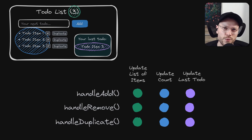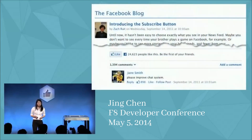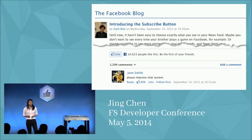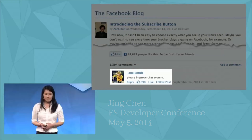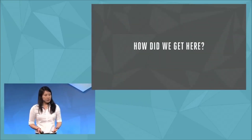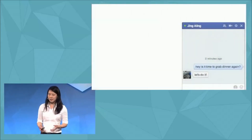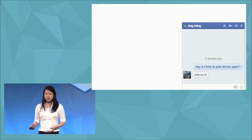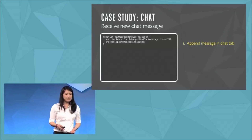And this is exactly what the Facebook team was struggling with in 2011. The chat UI grew in complexity: they started with something pretty simple — a chat tab that shows a list of messages, and whenever you get a new chat message, you just append it. The code was pretty manageable.